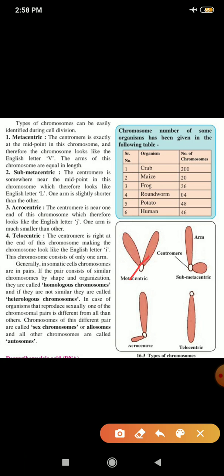Second, submetacentric. The centromere is somewhere near the midpoint in this chromosome, which therefore looks like the English letter L. One arm is slightly shorter than the other. Observe it.